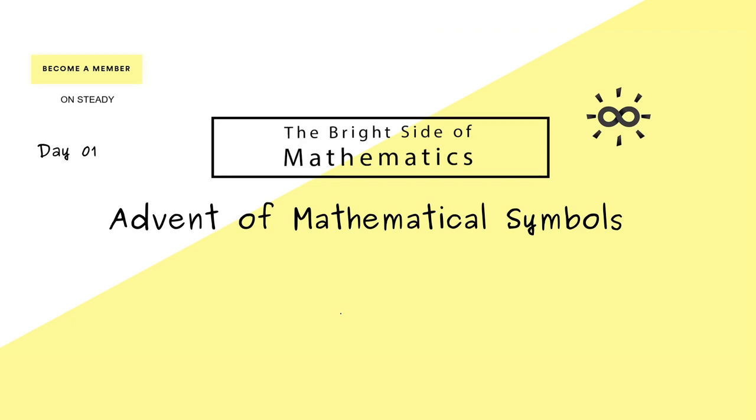The mathematical symbol of today is the Kronecker delta, written as lowercase delta ij.